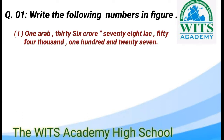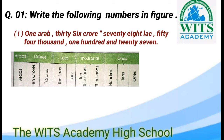Question 1: Write the following numbers in figures. جب ہم words کو figure میں write کرتے ہیں تو پہلے ہم places کو write کرتے ہیں۔ یہاں ہم نے place value chart بنایا ہوا ہے، اس میں ہم نے portions بنائے ہیں اور places لکھی ہیں۔ پہلا portion ones کا ہے، دوسرا thousands کا، پھر لاکھ، کروڑ اور ارب۔ جب ہم portions بناتے ہیں تو right side سے بناتے ہیں، اور جب words کو figure میں write کرتے ہیں تو left side سے start کرتے ہیں۔